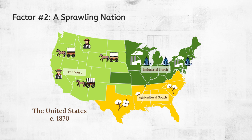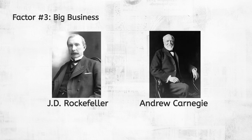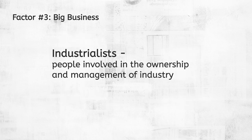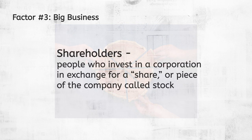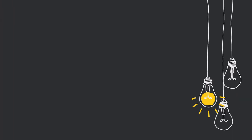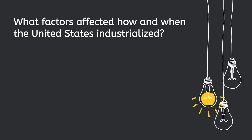Meanwhile, the first skyscrapers were being built in cities like Chicago and New York. Factor number 3 – Big Business. Another factor that set American industry apart was the creation of large, powerful corporations. Corporations like Rockefeller's Standard Oil and Carnegie Steel dominated their industries by forming monopolies, generating tremendous profits. This created a new class of wealthy American industrialists, or people involved in the ownership and management of industry. At the same time, these corporations were beholden to their shareholders, or people who invest in a corporation in exchange for a share of the company called stock. To keep shareholders happy, corporations cut costs to increase profits, often at the expense of laborers. Let's pause and answer the first part of our third guiding question: What factors affected how and when the United States industrialized?